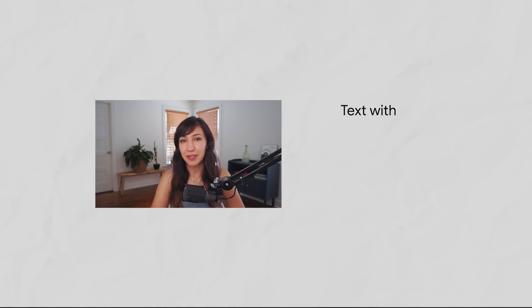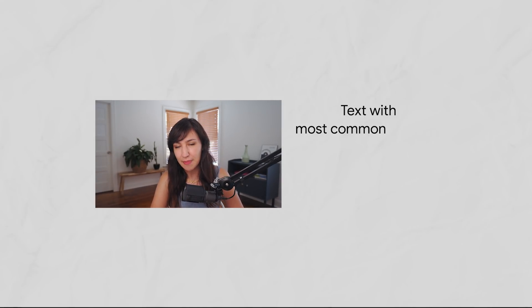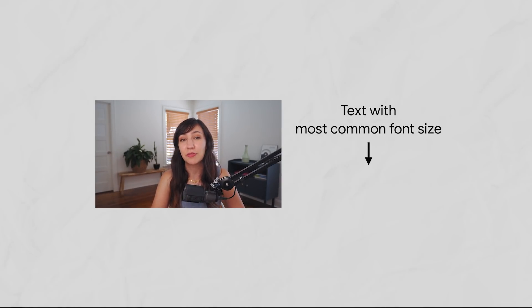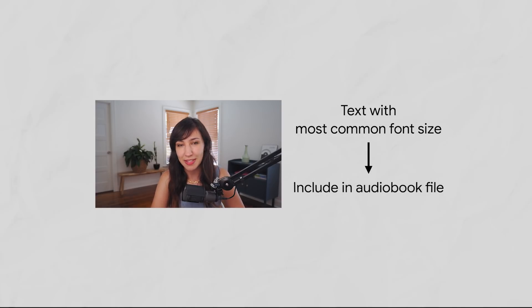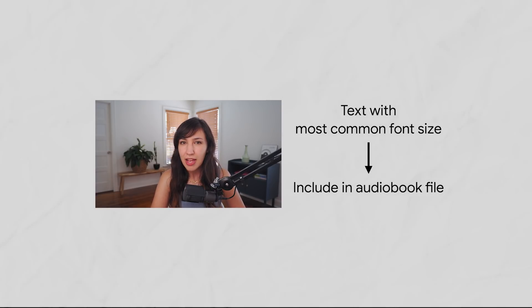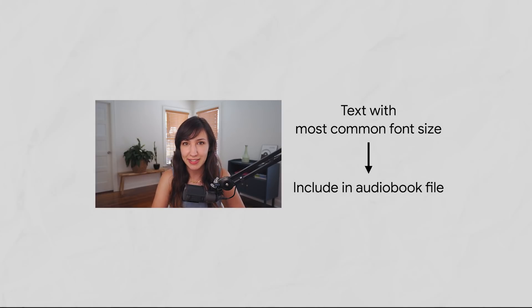So in order to avoid labeling data myself, I'm going to use a little cheat here. Instead of building a custom model, I'm just going to look at all of the font sizes, and whatever font size is most frequently used, I'll assume that's the body text and include it in the audiobook. If you want more details about my approach and Kaz's approach, make sure you check out the blog post linked below.